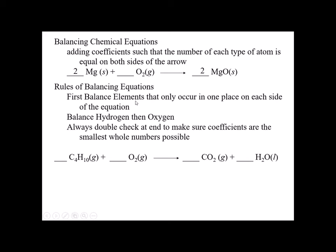That's a simple one. Typically you want to balance atoms that only occur in one place on either side of the equation, then do hydrogens and oxygens last. Always double-check at the end to make sure the coefficients are the smallest whole numbers — if you have 2, 2, 2, 2 you may have accidentally multiplied by two and need to divide everything by two.